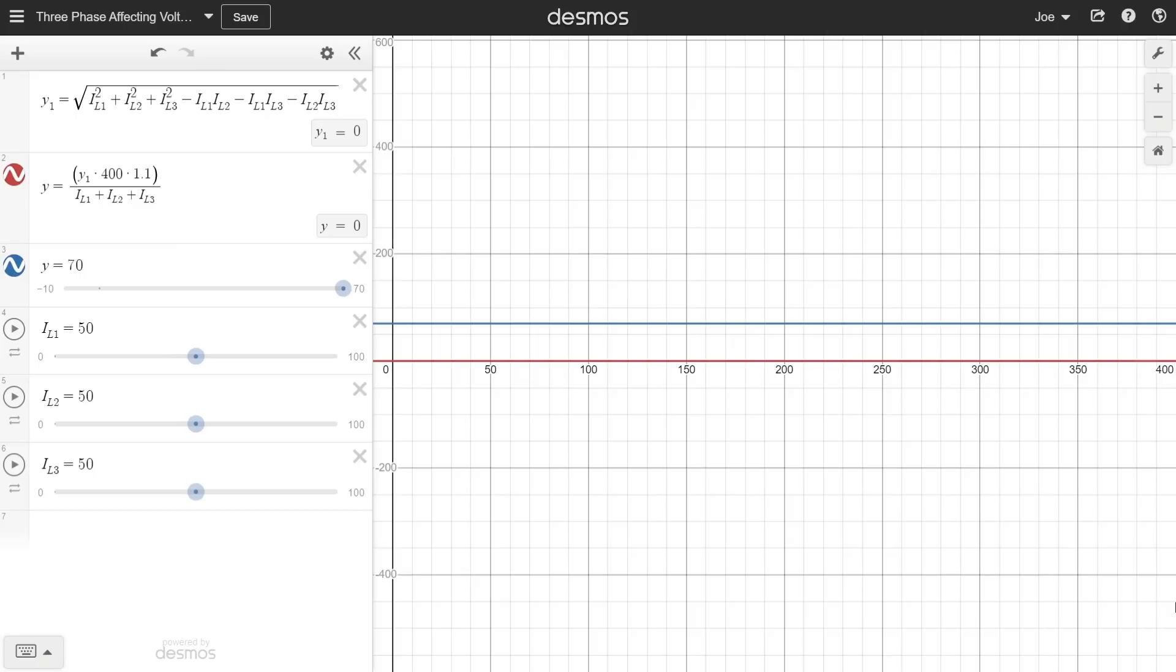However, look what happens when we start to unbalance the system. Let's load up the current in L1 a bit because that's what tends to happen in the real world. Can you see there the voltage between the body of the car and the literal earth is now going up, until if the difference in the phases gets big enough it goes over that threshold value of 70 volts and suddenly the person touching the car and standing on the ground has 70 volts across them and is in serious danger.